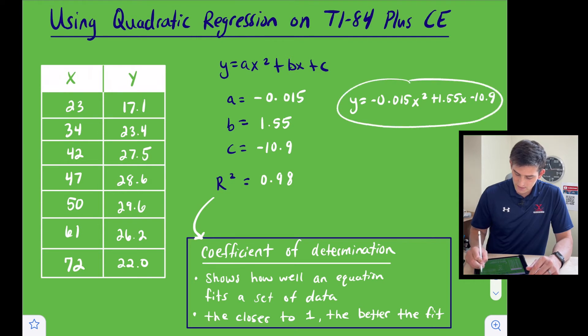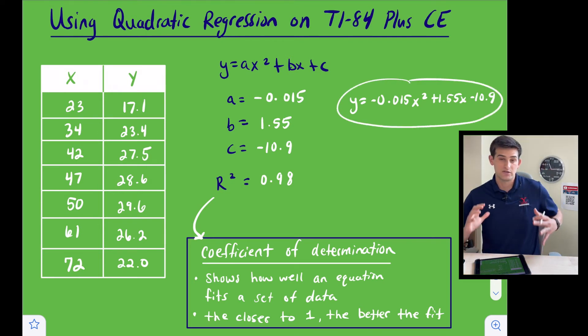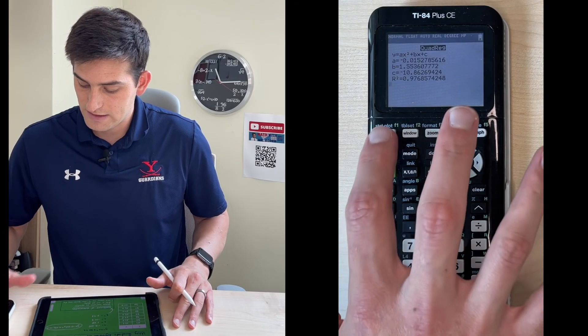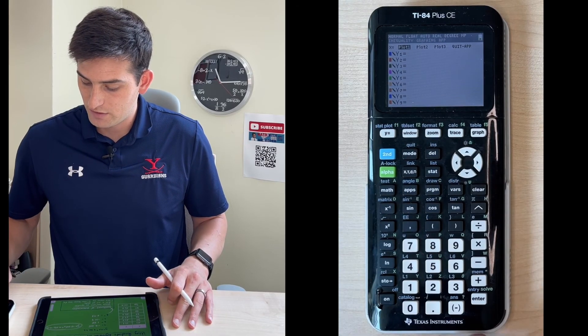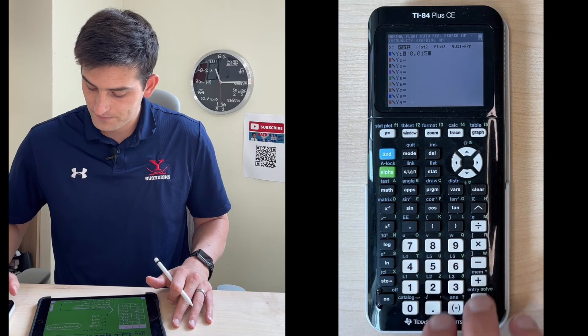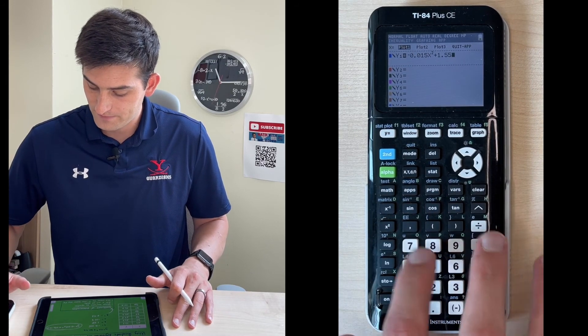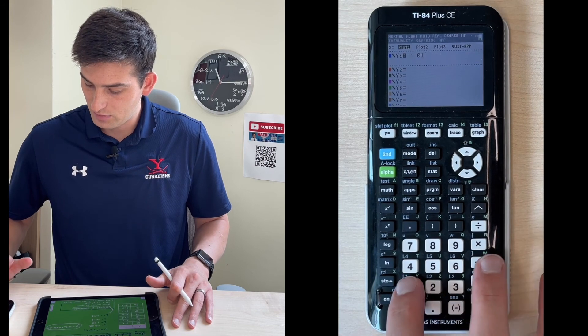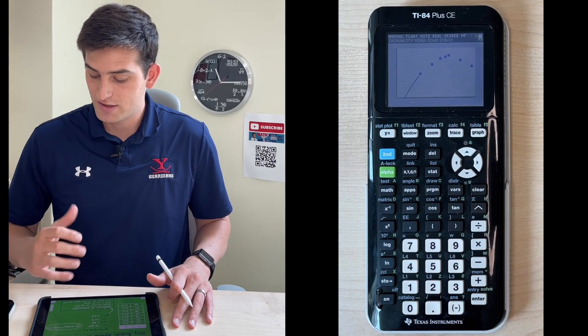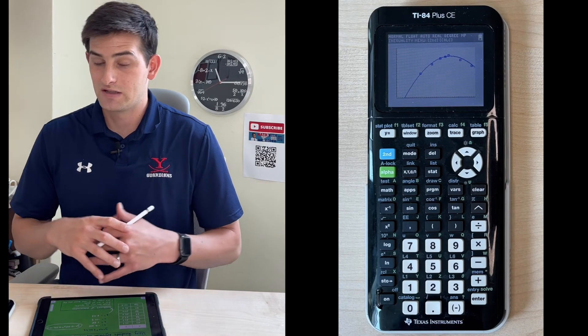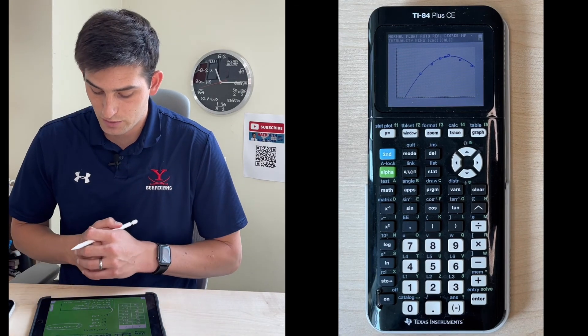Now we can graph this in our calculator to actually see our quadratic function. We go into y equals, and in y1 I'm going to type in negative 0.015 x squared plus 1.55 x minus 10.9. When we hit graph, we should see our parabola go right through as close as possible to those points.